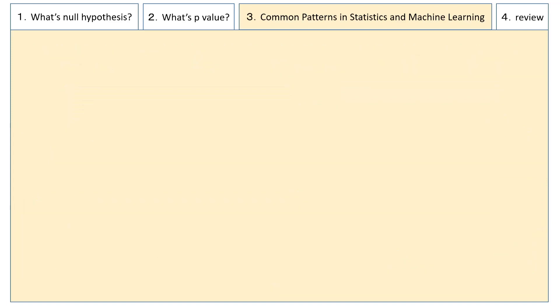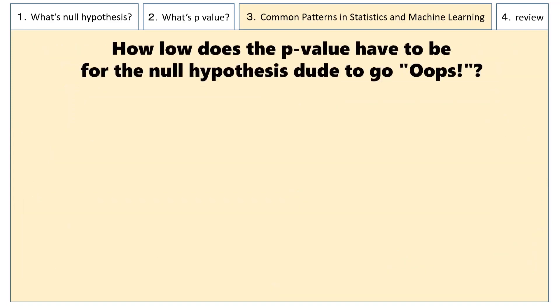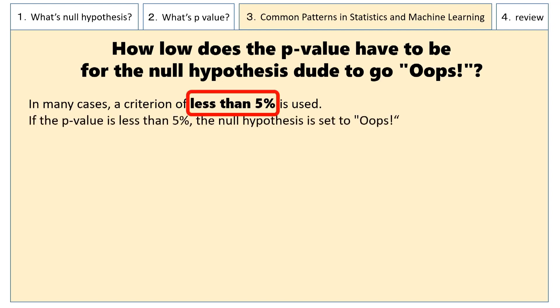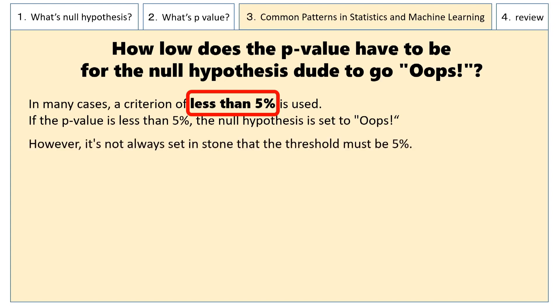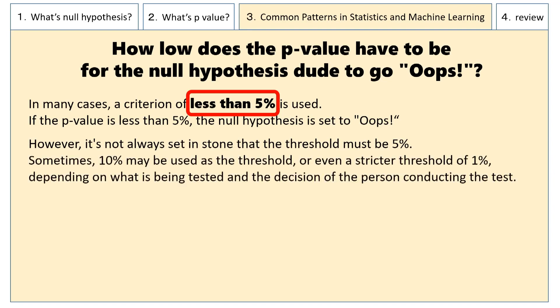Now, one question remains: how low does the p-value have to be for the null hypothesis to go "Oops"? In many cases, a criterion of less than 5% is used — if the p-value is less than 5%, the null hypothesis is rejected. However, it's not always set in stone that the threshold must be 5%. Sometimes 10% may be used, or even a stricter threshold of 1%, depending on what is being tested and the decision of the person conducting the test.